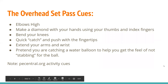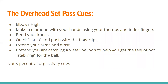Overhead set pass cues: your elbows should be nice and high. Make a diamond with your hands using your thumbs and index fingers. Bend your knees — it should be a quick catch and push with the fingertips, not actually catching and absorbing the ball. Extend your arms and wrists, and pretend you're catching a water balloon to get the feel of not stabbing the ball. Some of these cues are sourced from pecentral.org.